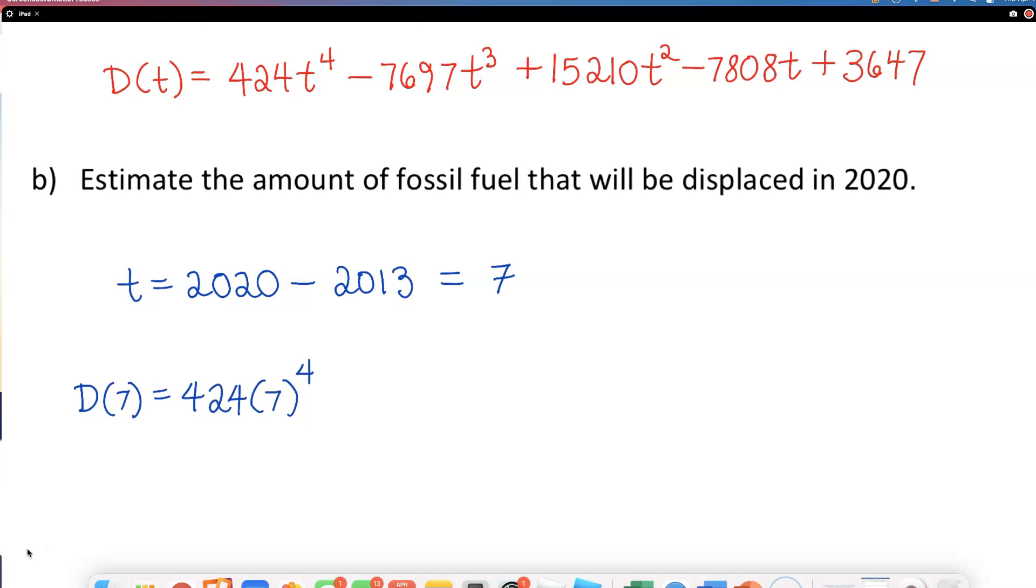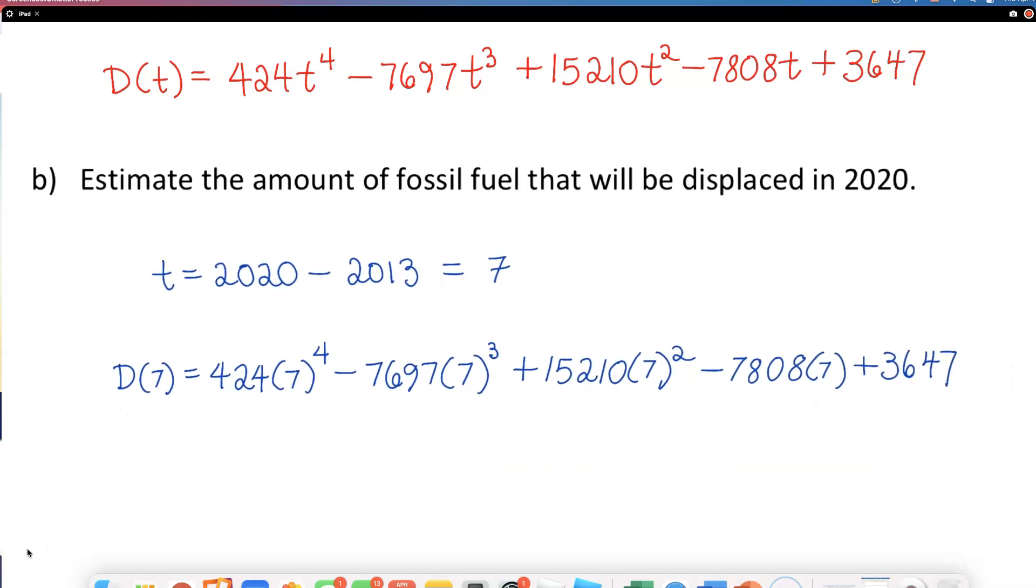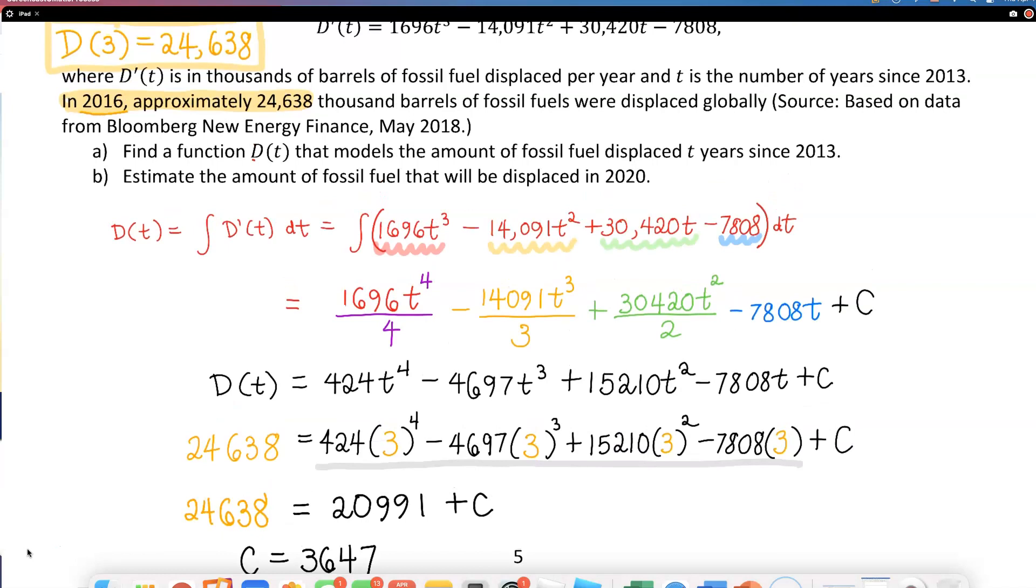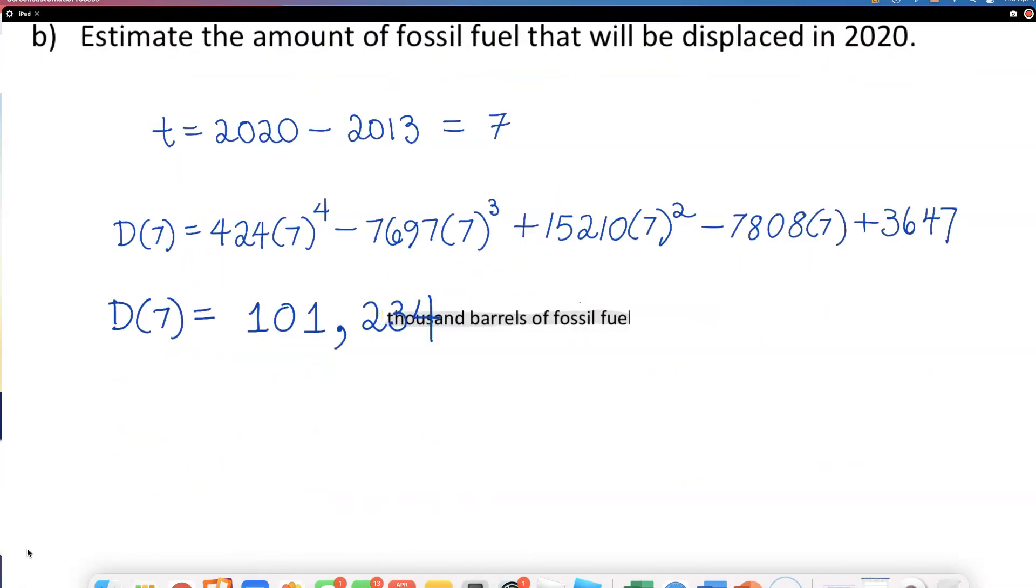I'll write it down: 424(7)⁴ - 4697(7)³ + 15,210(7)² - 7808(7) + 3647. Go ahead and type that in your scientific calculator. The answer came out to be 101,234 thousand barrels of fossil fuels. So this is equal to 101,234,000 barrels of fossil fuel.